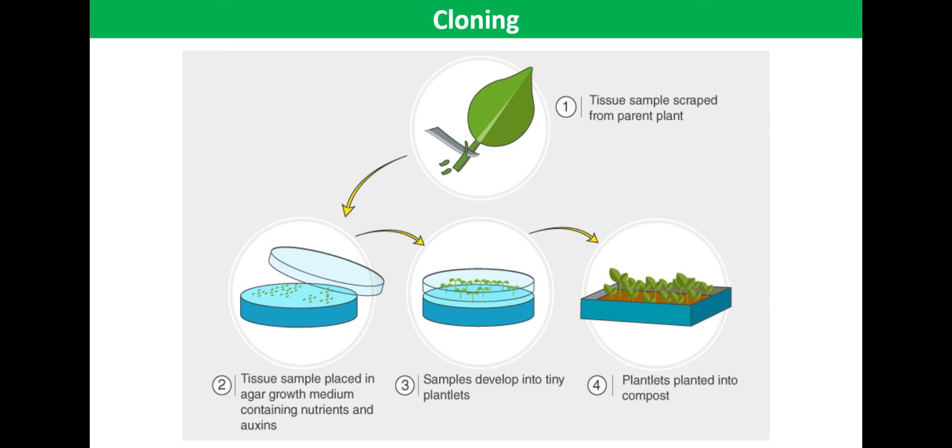Once a callus is formed, it is divided to produce a large number of small clumps of undifferentiated cells. These small clumps of cells are stimulated to grow, divide and differentiate into different plant tissues.